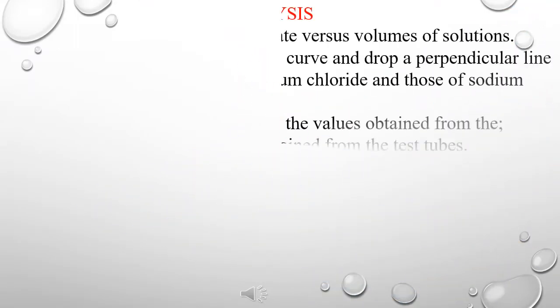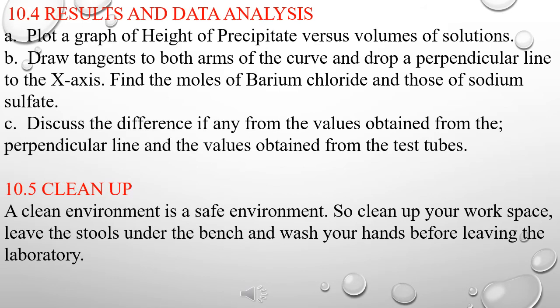Results and Data Analysis. A: Plot a graph of height of precipitate versus combination of solution volumes. B: Draw tangents to both arms of the curve and drop a perpendicular line to the x-axis. Find the moles of Barium Chloride and those of Sodium Sulfate. C: Discuss the difference, if any, from the values obtained from the perpendicular line and the values obtained from the test tubes.